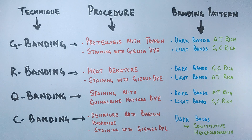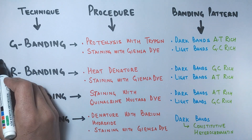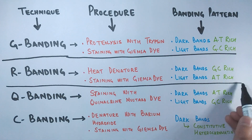These are the main banding techniques for staining chromosomes. Although there are other banding techniques like T-banding and NOR banding, these are the major ones we have discussed.